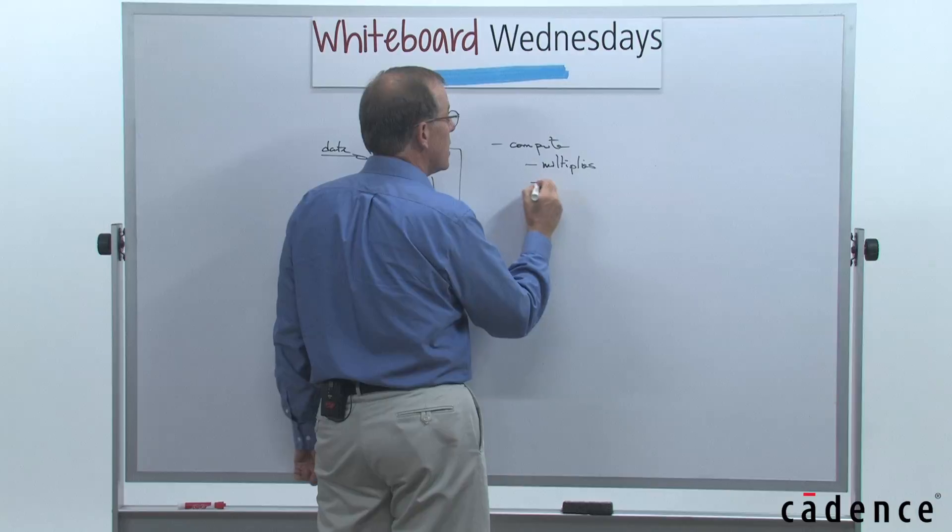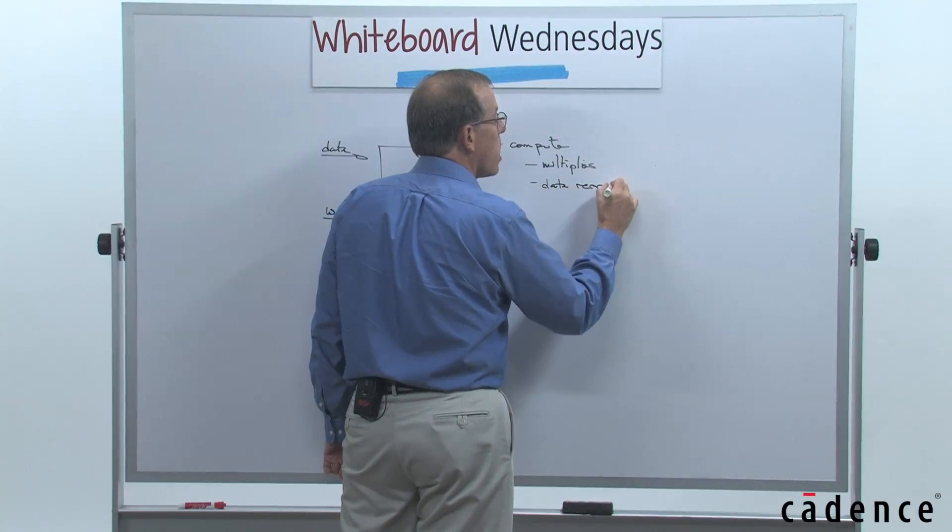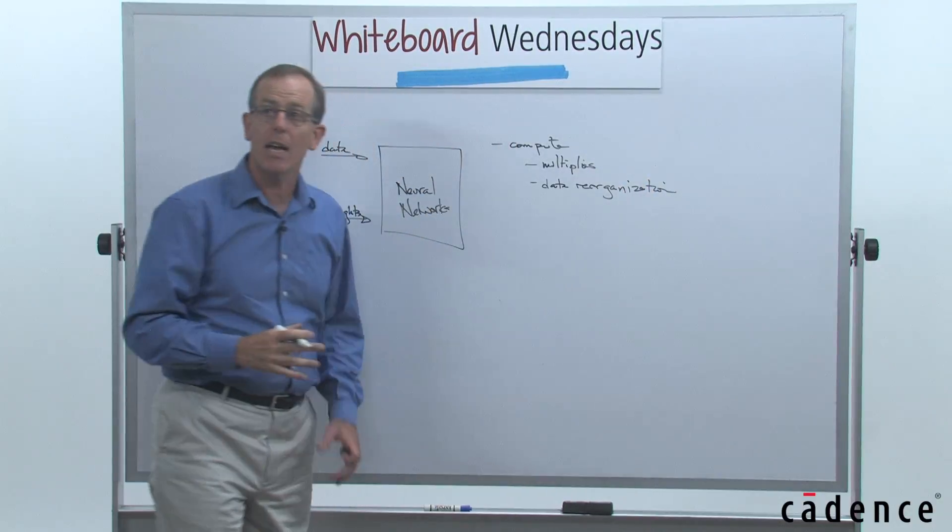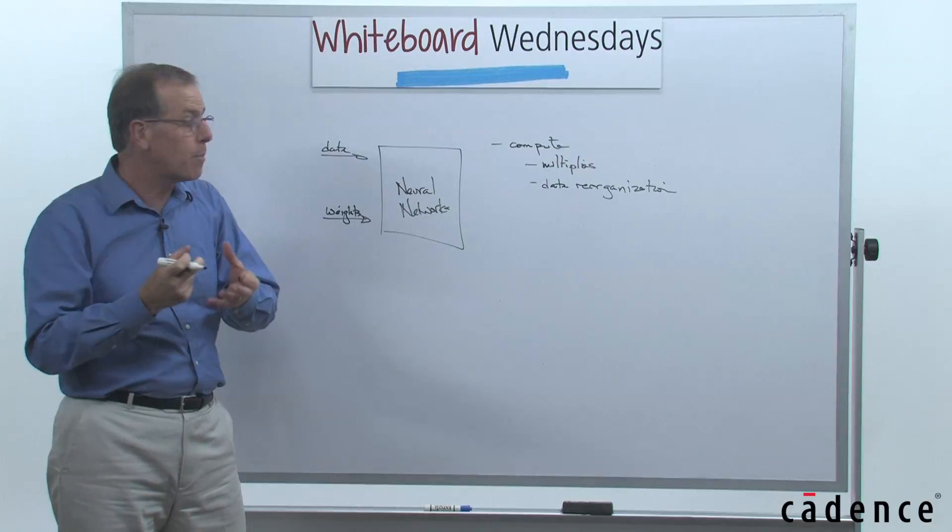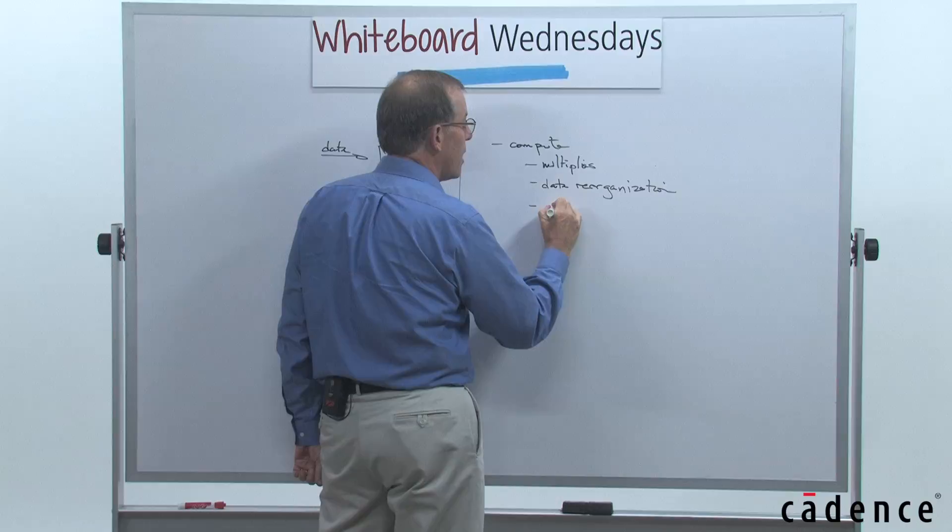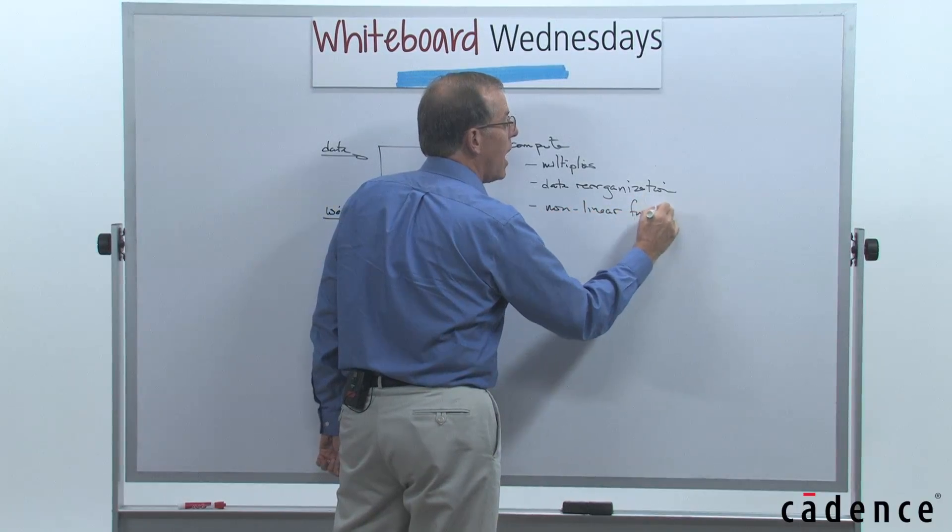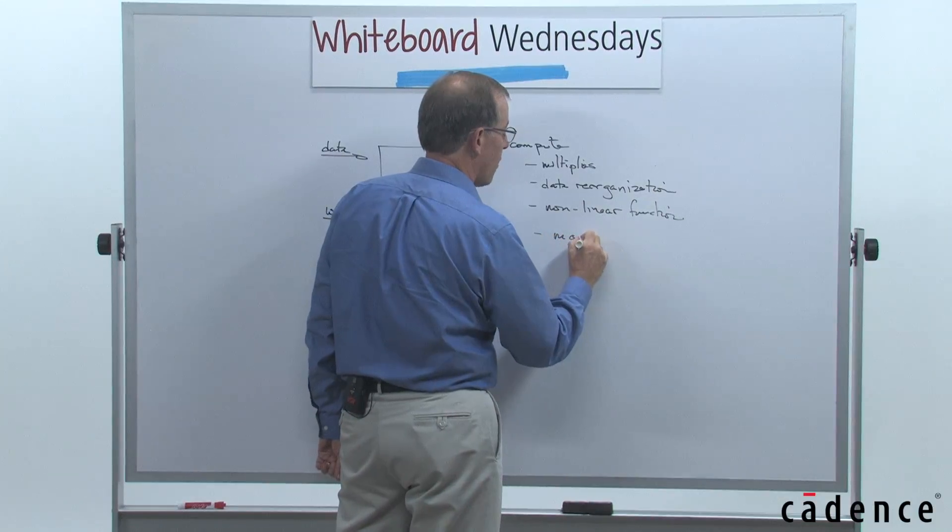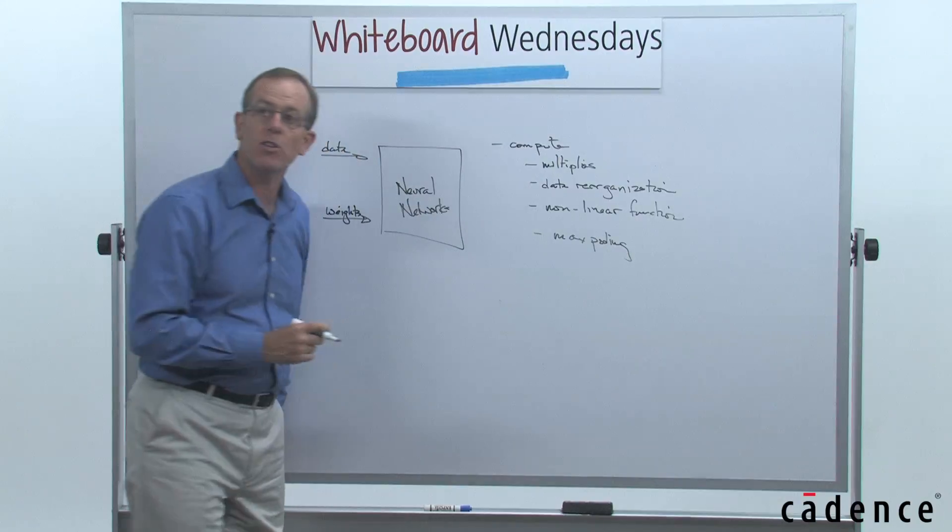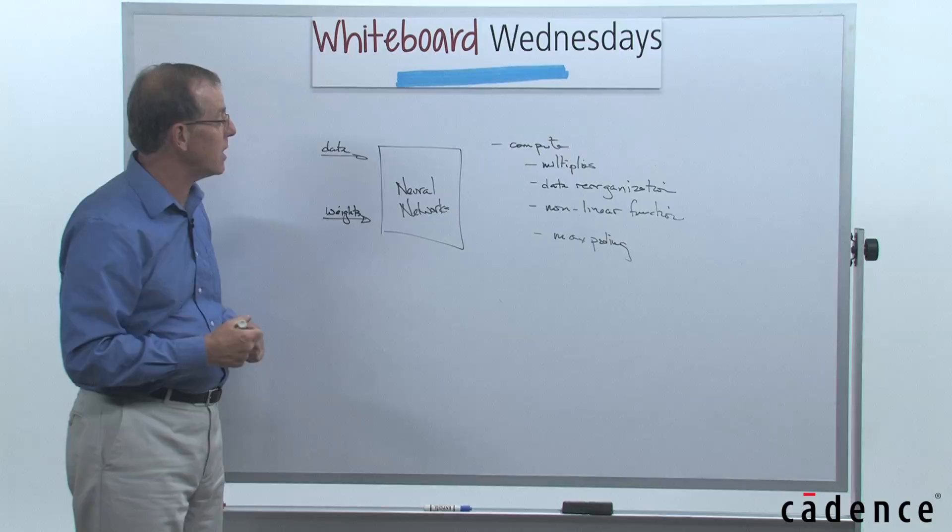But we're also going to need to implement a lot of data reorganization because we have to analyze the data in a number of different permutations and structures. We're going to need to implement non-linear functions very efficiently. We're going to have to do things like max pooling, finding the largest in a group of features in order to propagate the most appropriate value to the next level.